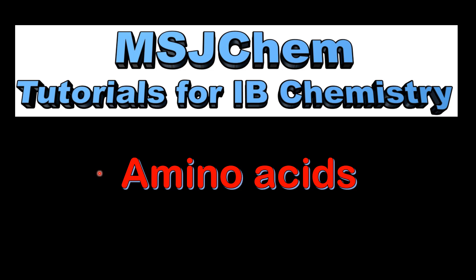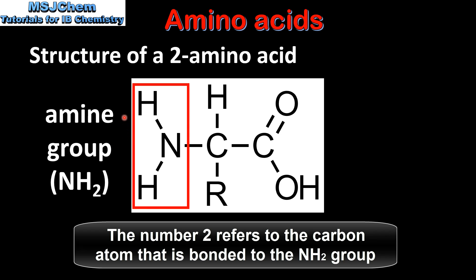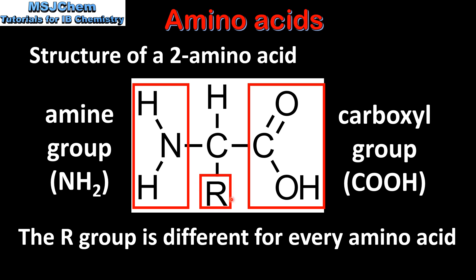This is MSJChem. In this video I'll be looking at the structure and bonding of amino acids. Let's start by looking at the structure of an amino acid. On one side of the molecule we have an amine group which is NH2, on the other side we have a carboxyl group. The R group, which is a side chain, is different for every amino acid.